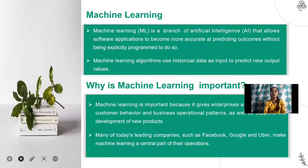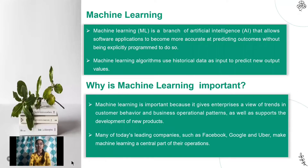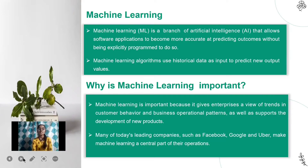The domain of our project is machine learning. As we all know, machine learning is a branch of artificial intelligence which allows software applications to become more accurate at predicting outcomes without being explicitly programmed to do so. Machine learning algorithms use historical data as input and predict new output.